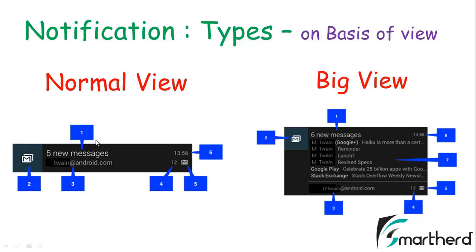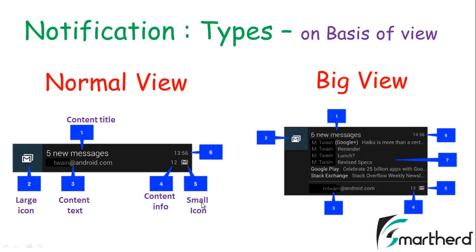Let me show you the main components of the notification. At the top, 'five new messages' is the content title. The second one is the large icon that you set while building the notification in Java code. The third one is the content text, the fourth is the content information. The fifth one is the small icon. You can make both icons the same or customize them with separate images.